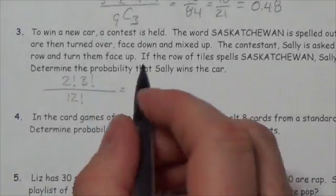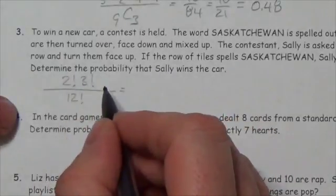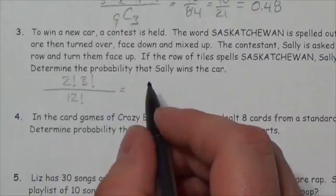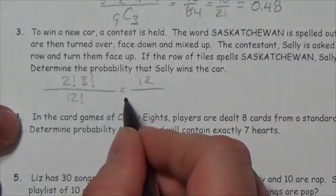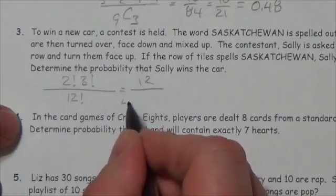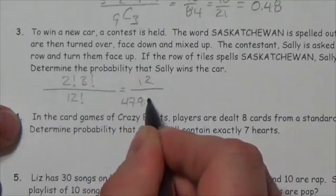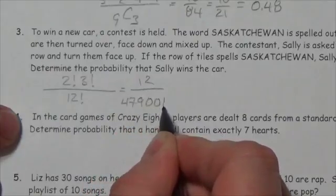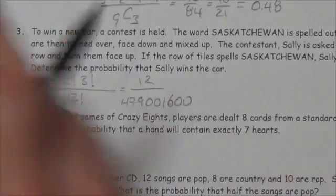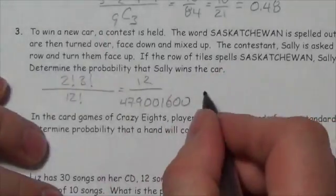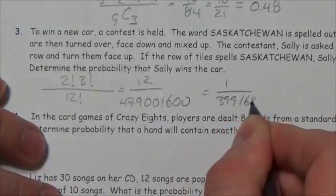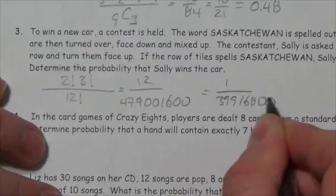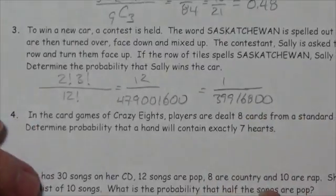Now, that is going to be, 3 factorial is 6 times 2 is going to be 12. And then that would be over, well, 12 factorial is a huge number. That's 479,000,000, what is that? 1,600. Divide that by 12, and this is still going to be 1 over 39,916,800. That's huge here.